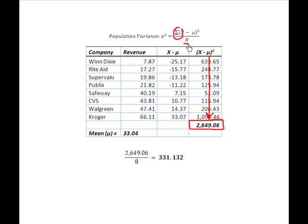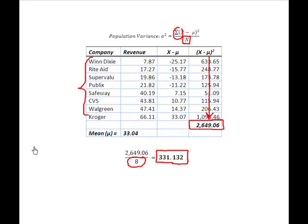The last piece of the puzzle is to divide by N, the number of observations. I have 8 in this distribution, so I divide by 8, and I determine that the variance of the population of these 8 drug stores is 331.13.